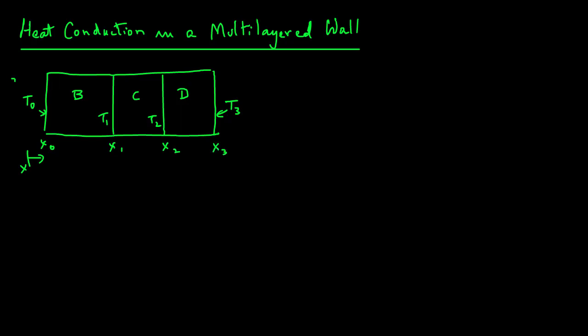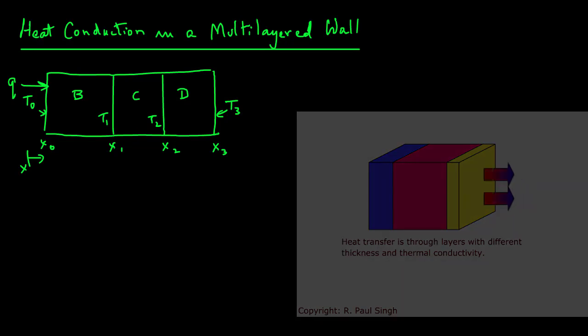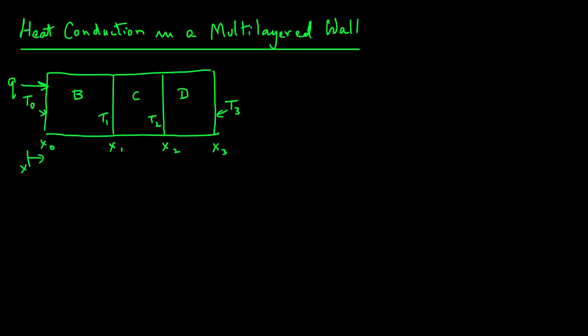Now Q, the rate of heat transfer through the wall, remember that Q must remain the same. We are talking of steady state conditions. We are not generating energy or destroying energy. So whatever Q enters the wall on this side must come out on the other side.